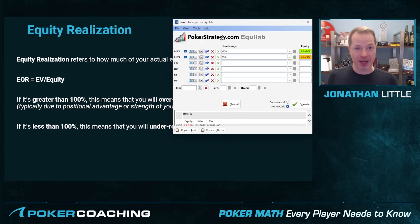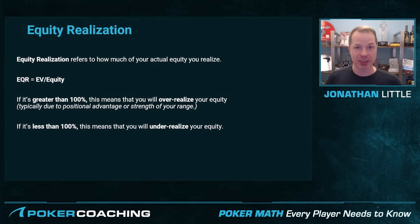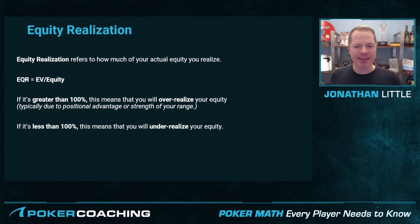Alternatively, say you raise from under the gun, I call from the big blind with my 9-7 and it comes Jack-6-2. I check, you bet, I fold. In that scenario I have six outs to make the best hand, but by betting you take away my equity. So if your equity realization is greater than 100%, it means you're going to over-realize your equity, and this is usually the case when you have the positional advantage — typically when you get to act last — or when your range is way stronger than your opponent's range. When you raise from first position you should be raising only very good hands, whereas when I'm calling from the big blind I should have a lot of weak hands. So this is a spot where the big blind is going to drastically under-realize their equity.